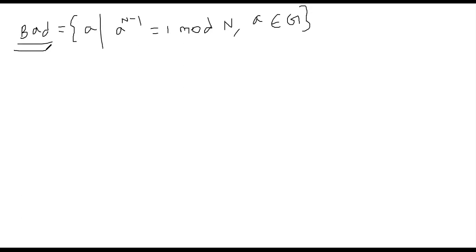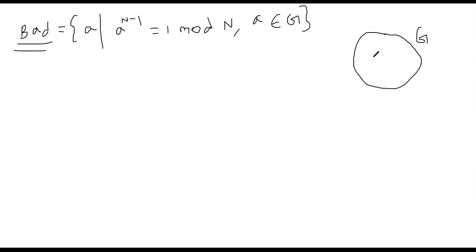I'm going to argue that bad itself is a subgroup. Suppose you have a group G, for example Z*_n — that's the group we have been working with. G can be Z*_n where n is the number we wanted to check whether it's prime or not. We argue that bad is a subset and actually a subgroup of G.